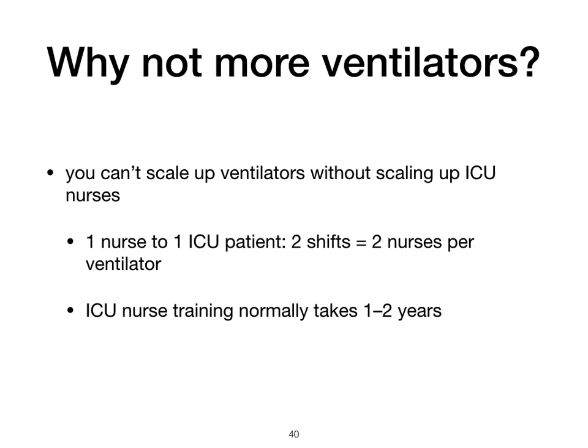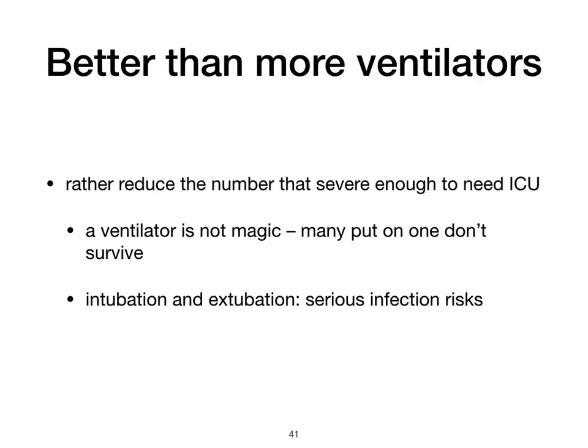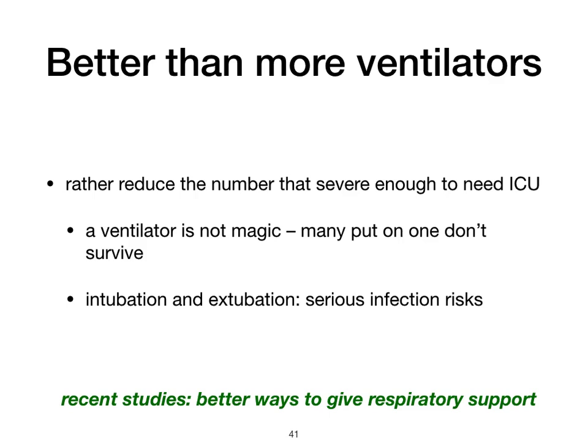Where the government is going wrong is too much emphasis on sourcing ventilators — models and data should be public, with far more emphasis on testing and contact tracing. Why shouldn't government go all out to source ventilators? First, you can't scale them up without scaling up ICU nurses. The normal ratio is one nurse to one patient, and with two shifts you need two nurses per ventilator. With very skilled ICU nurses you can get by with fewer, but we're talking about scaling up rapidly with very inexperienced nurses, and normal ICU training takes one to two years. You're much better off reducing the number who are severe enough to need an ICU. A ventilator is not magic — many people put on one don't survive intubation and extubation, there are serious infection risks, and recent studies show better ways to give respiratory support than ventilation.